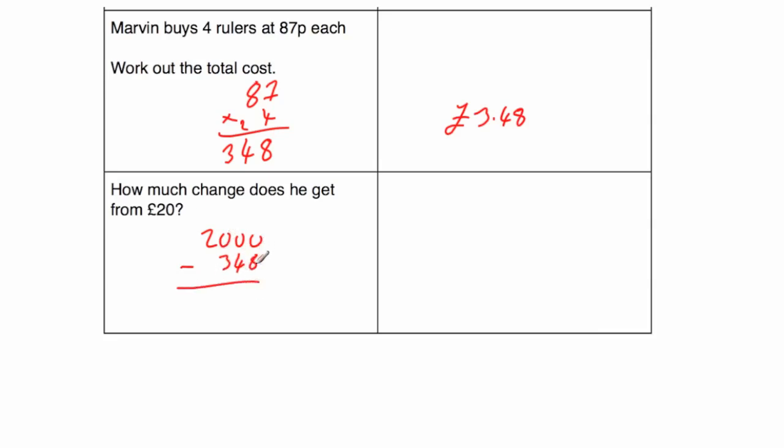well, we're going to do 0 take away 8. Well, we can't, so we need to borrow. We've got a 0 and then another 0. So let's cross off the 2, call it a 1, call that a 10. Cross that off, 9, bring the 1 over, cross it over, 9, bring it over.